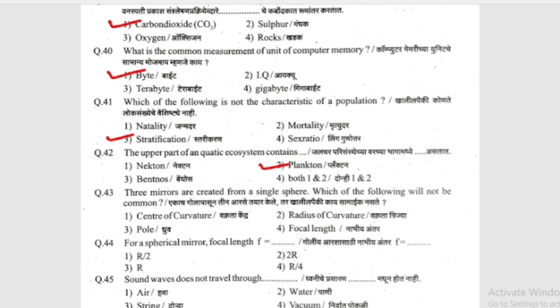Three mirrors are created from a single sphere; which of the following will not be common? (Ekaaz gola pasun teem arse tayar kele tar khaalil pe ki kai saamaiik nasate.) Options: centre of curvature (vakrata kendra), radius of curvature (vakrata trija), pole (dhruwa), or focal length (nabhiya antar). The answer is pole (dhruwa).